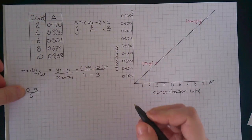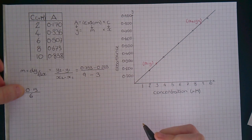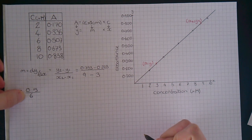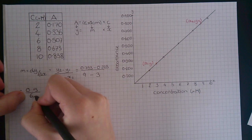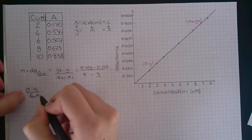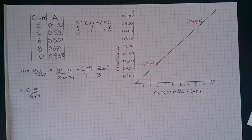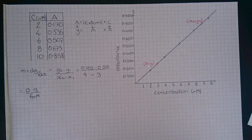The top line of the fraction is the absorbance, which is in arbitrary units, so we don't need to write anything. But the bottom line of the fraction is the concentration, which is in micromolar units. We need the concentration in molar units, not micromolar units.